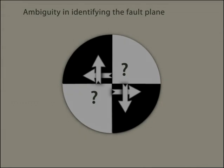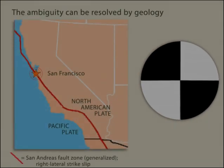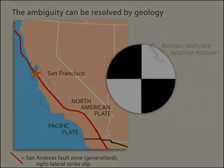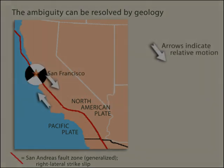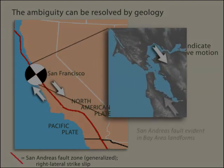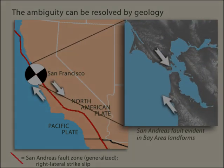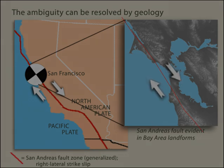For example, if an earthquake with an epicenter on the San Andreas fault had a focal mechanism that looked like this, the most likely choice would be that the fault plane is oriented northwest to southeast, parallel to the strike of the fault we observed at the surface.